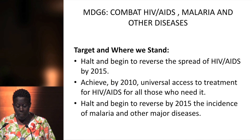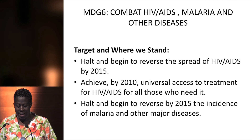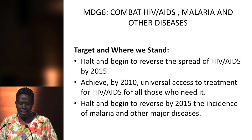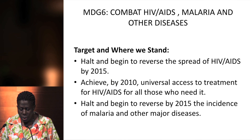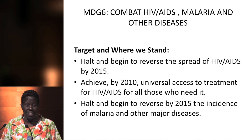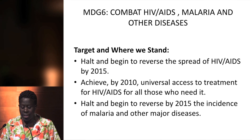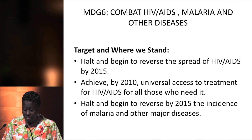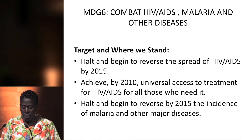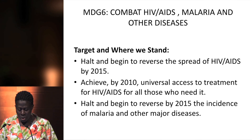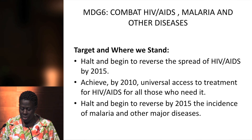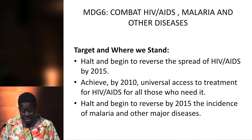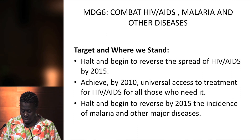MDG VI, which is our main focus, is to combat HIV/AIDS, malaria, and other diseases. The targets were: to halt and begin to reverse the spread of HIV/AIDS by 2015; to achieve universal access to HIV/AIDS treatment for all who need it by 2010; and to halt and begin to reverse by 2015 the incidence of malaria and other major diseases.